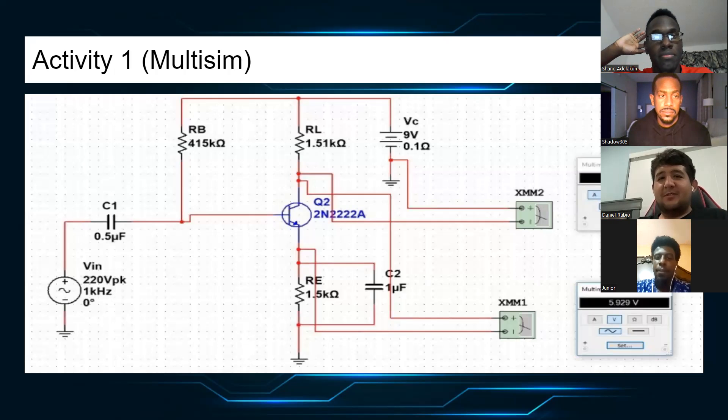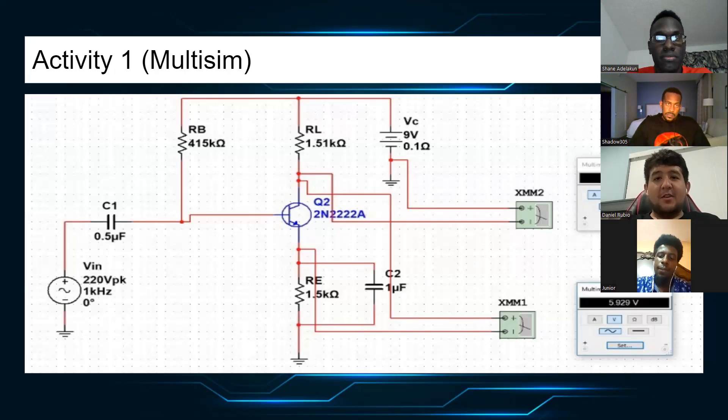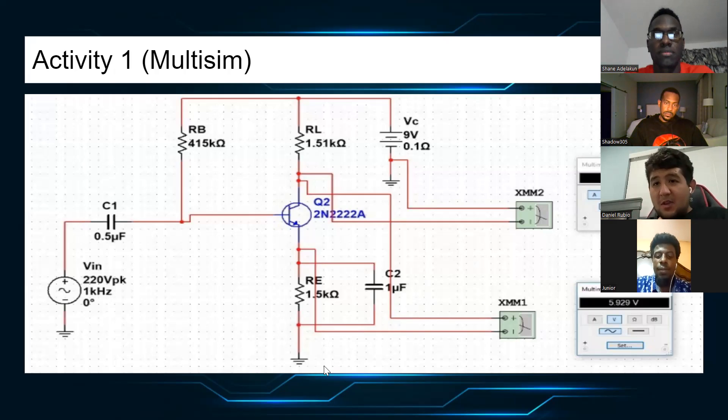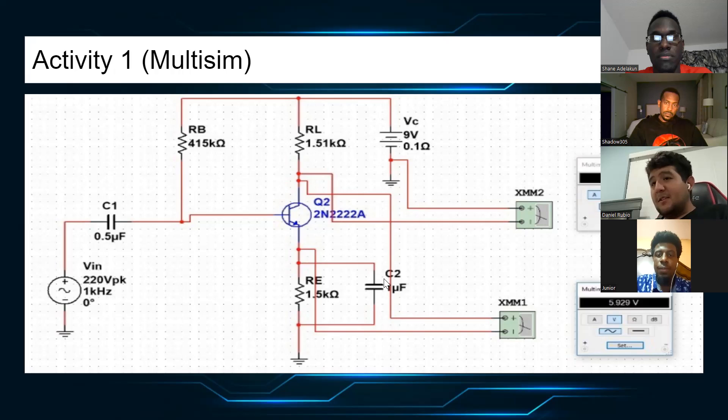This is the Multisim, where we have capacitor 1, 0.5 microfarad. For the resistor RB, we have 415 kilohms. RL, 1.51 kilohms. And VCC will be the 9 voltage, where we have 0.1 ohms. And below, we have RE, the resistor, 1.5 kilohms. And the second capacitor with 1 microfarad. And as you can see on the right side of the screen, we have 2.069 milliamps. And below that, we have 5.929 voltage.